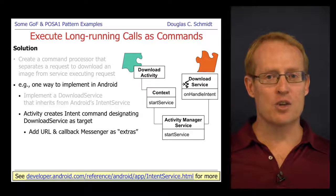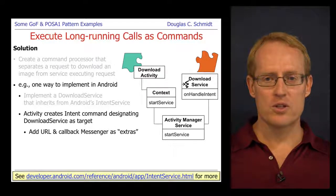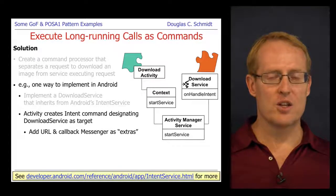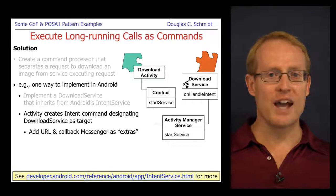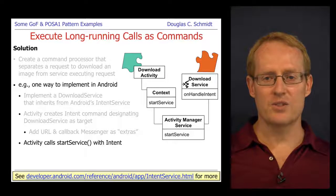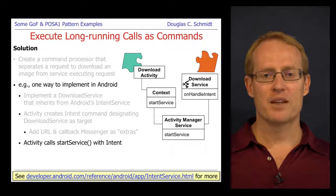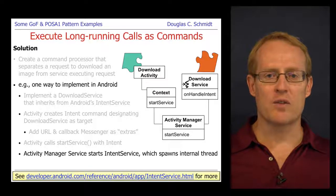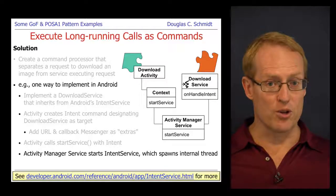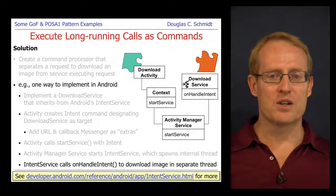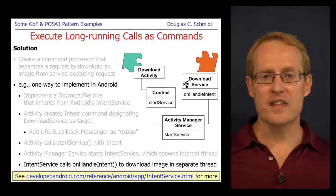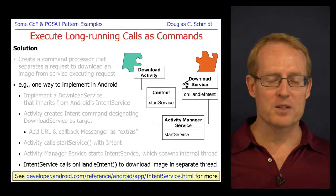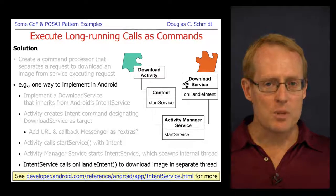The activity creates an intent designating the download service as the target, adding extras such as the URL to download and a messenger for callbacks. The activity then calls startService, passing in the intent. The activity manager service, a system service in Android, starts up the IntentService in a separate process, which spawns an internal thread. That thread calls the onHandleIntent hook method on the download service, which downloads the image, sends the URI back to the activity via the messenger callback.